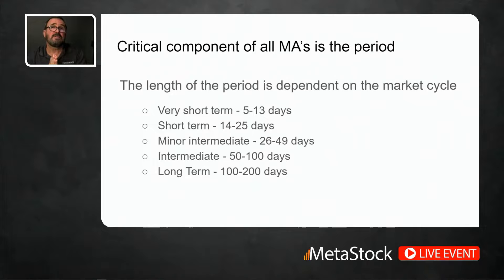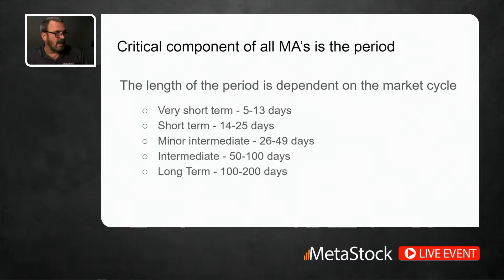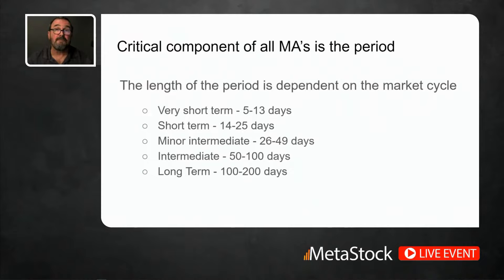A critical component of a moving average is the period. You can imagine 100-day periods, 5-day periods, and 10-day periods — it's how far down the data stream you're going to use in your calculation. In 'Technical Analysis from A to Z,' Achelis specifies that a very short market cycle requires shorter periods like 5 to 13 days, and a longer-term market cycle would require a period of 100 to 200 days. A very popular moving average used in technical analysis is the 200-day moving average.